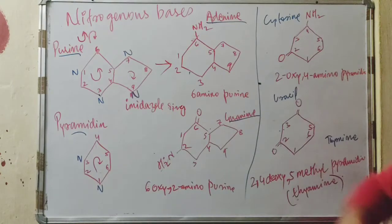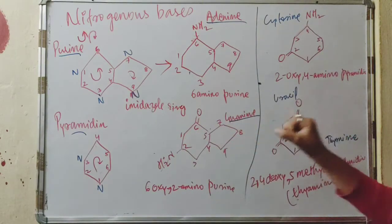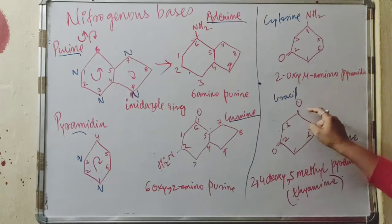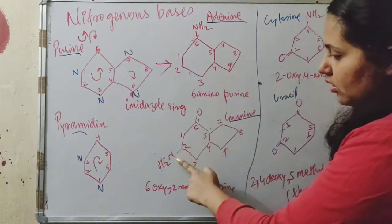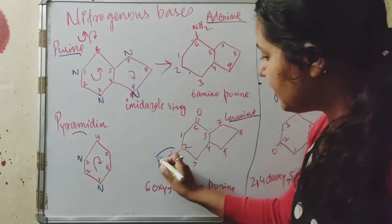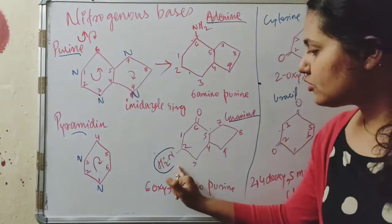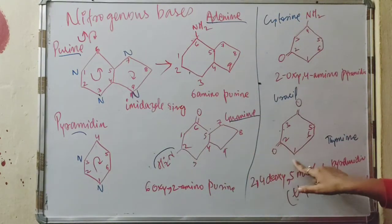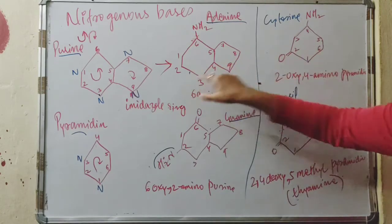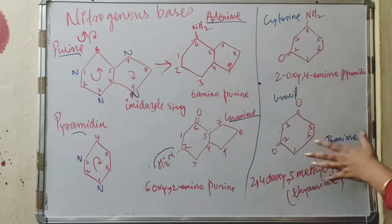For guanine, you draw the same purine ring and then draw oxygen in the head part. For uracil, you also draw oxygen in the head part. The exception is that in guanine you draw an amino group at the second carbon, whereas in uracil you draw oxygen at the second carbon — and in uracil you are not writing anything extra at the second carbon beyond that.